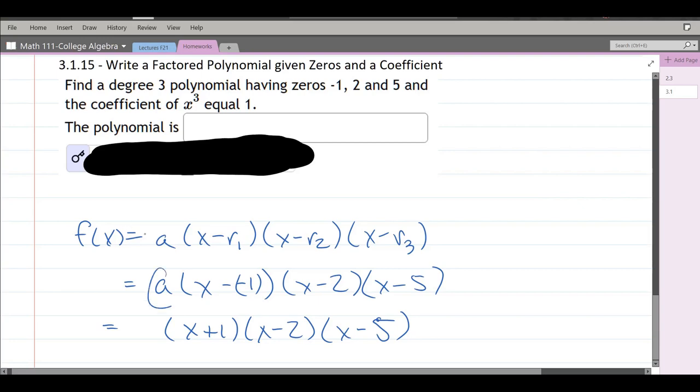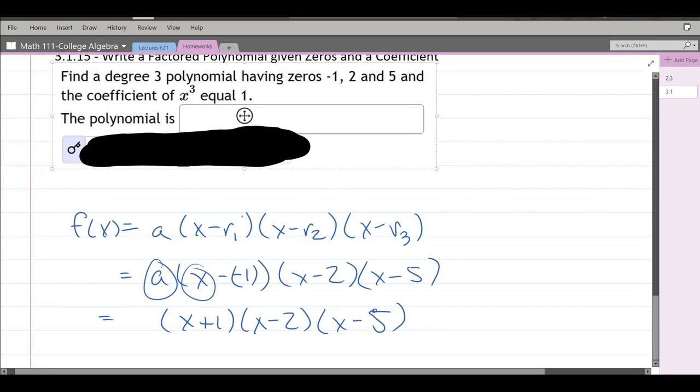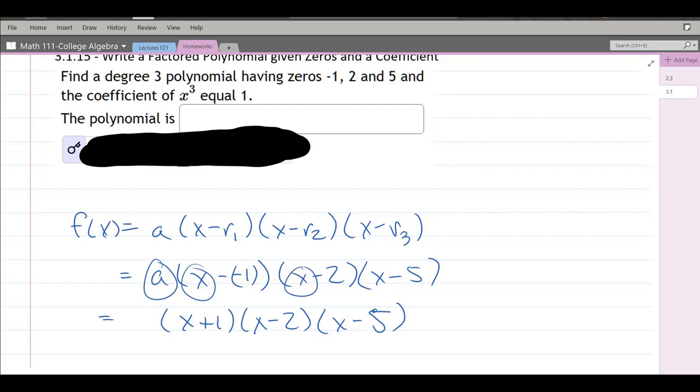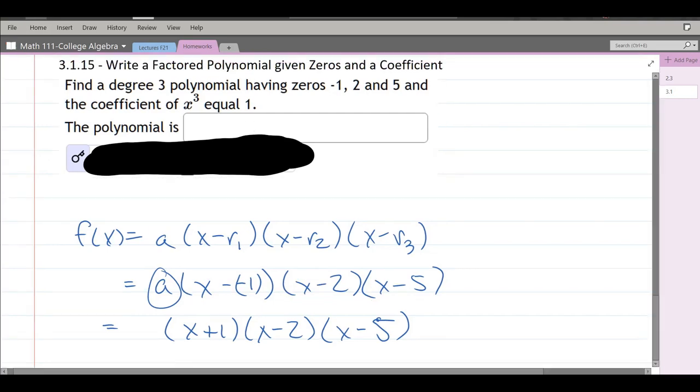And this coefficient right here, if we multiplied all these together the cubic term would come from x times x times x times a. So if we multiply this whole thing out we would get ax cubed plus other terms.